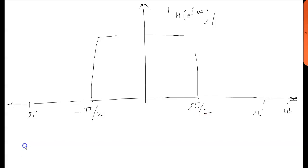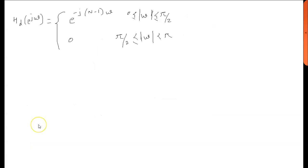Let's solve this problem. Taking the inverse discrete Fourier transform, we get h_d(n) = 1/(2π) times the integral.